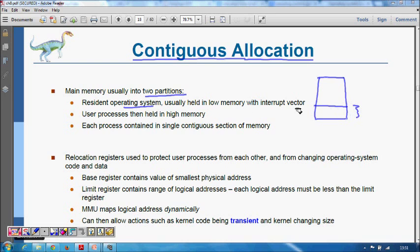Your main memory first has the resident operating system which is held in the lower part of the memory along with the interrupt vectors. Then there are user processes which are held in the higher part of the memory. In this contiguous allocation, each process has its own memory.